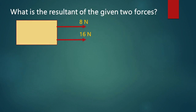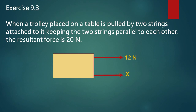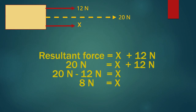You can pause the video and do the exercise. These two parallel forces are in the same direction, so we add them: 16 Newton plus 8 Newton gives a resultant of 24 Newton, in the same direction as both forces. In another question, the resultant force is given as 20 Newton and one individual force is 12 Newton, so 20 equals 12 plus X, giving X as 8 Newton.